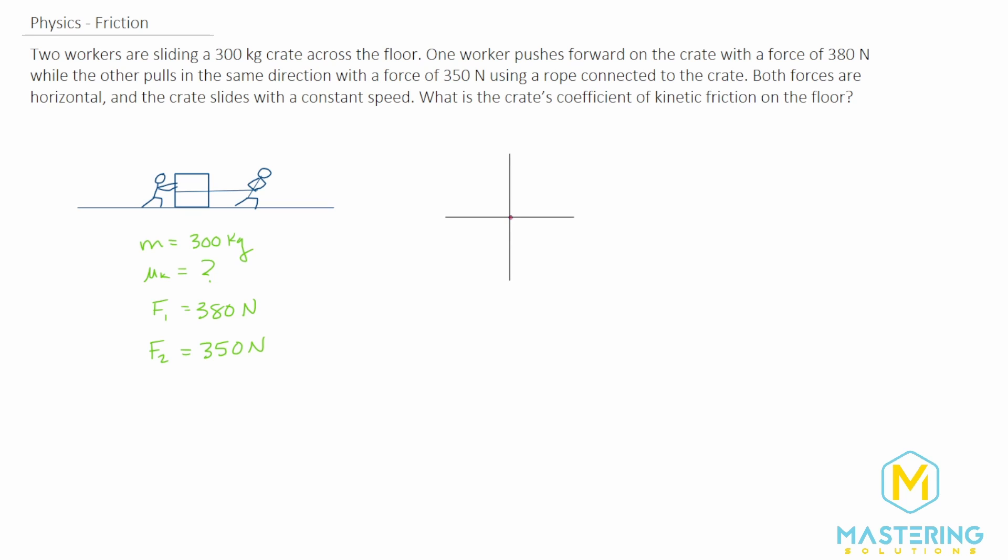We have the weight of the crate coming down and the normal force coming up, then we have kinetic friction going backwards because it's slowing the crate moving forward, and we have the two forces - force one was the bigger one and force two.